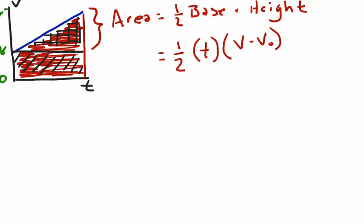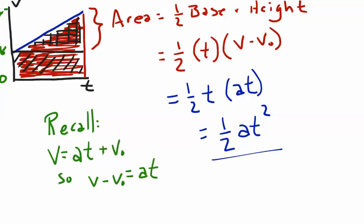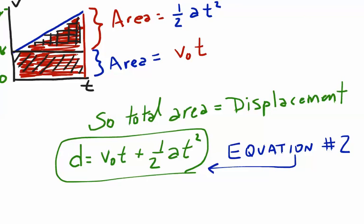For the triangle, the area is one-half times base times height. The base is t, and the height is the difference between the final and starting velocities, v minus v-naught. So this area is one-half times t times (v minus v-naught). From equation one, v equals at plus v-naught, so subtracting v-naught from both sides gives v minus v-naught equals at. Substituting that in, we get one-half times t times at, or one-half at squared.